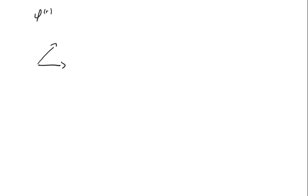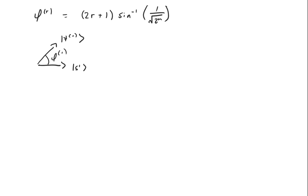We've shown that after r iterations of the subroutine, this angle phi of r — the angle between the state we're in and s prime — is equal to 2r plus 1 times the inverse sine of the square root of 1 over 2 to the n, where n is the number of qubits we're using. And when this angle is equal to pi over 2, the state we're in is equal to x star, the special state that we're looking for.